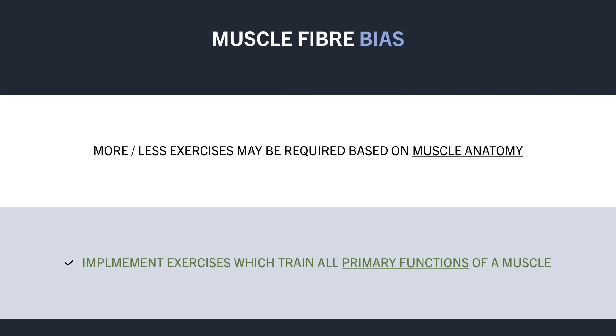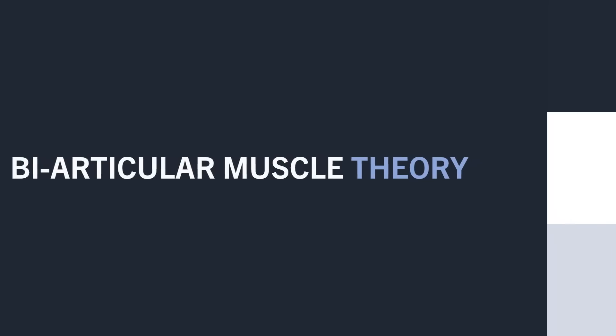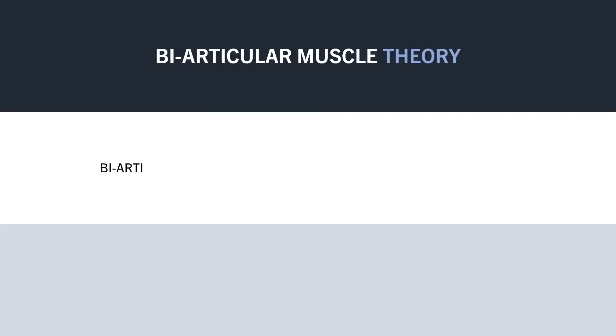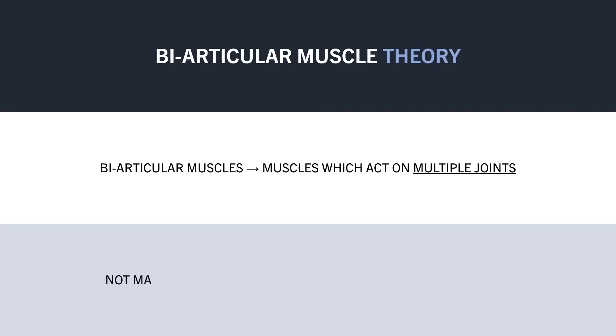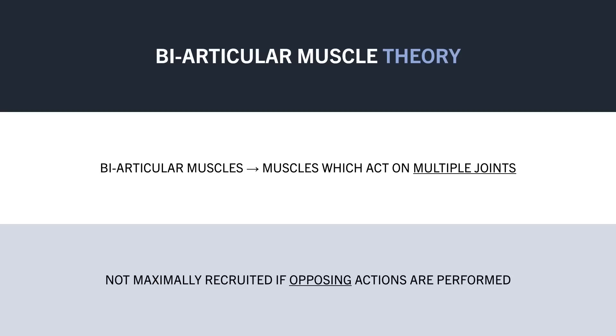The next consideration relevant for this topic is what is known as the biarticular muscle theory. This theory suggests that biarticular muscles — muscles that primarily act on more than one joint — won't be maximally recruited if the muscle is involved in opposing actions. Let's break this down to make it more understandable.